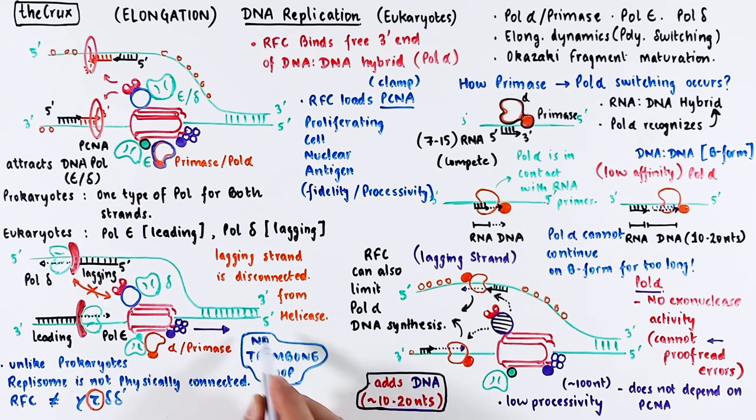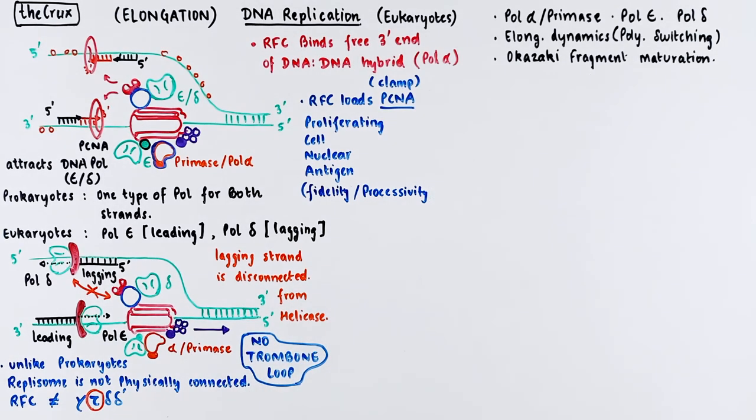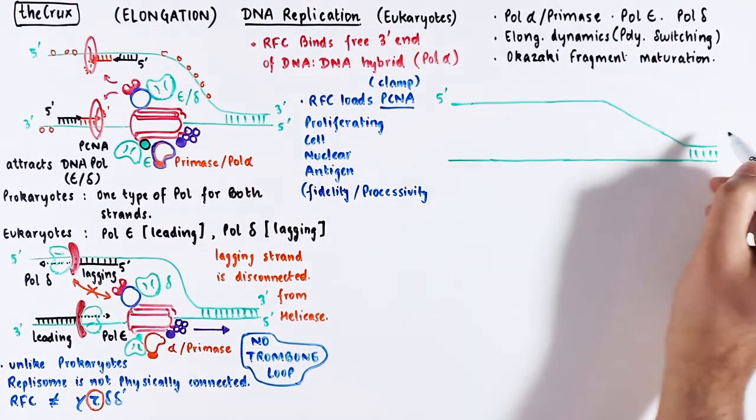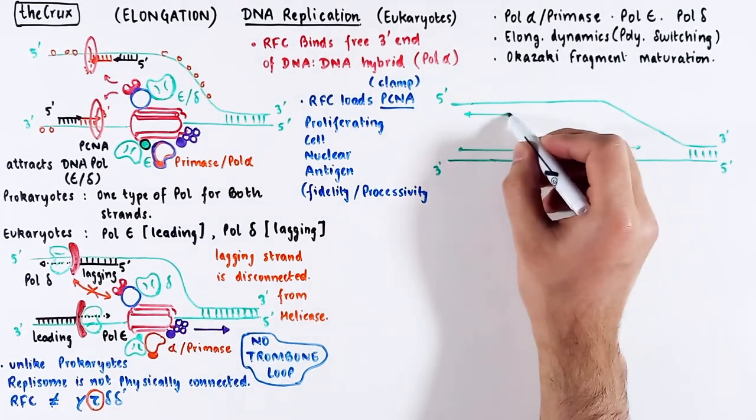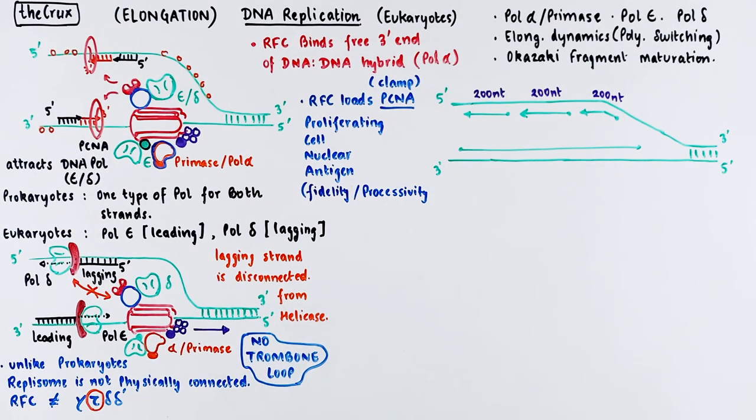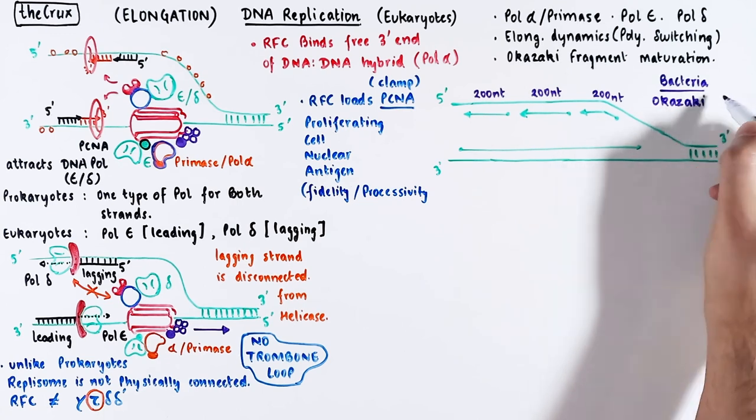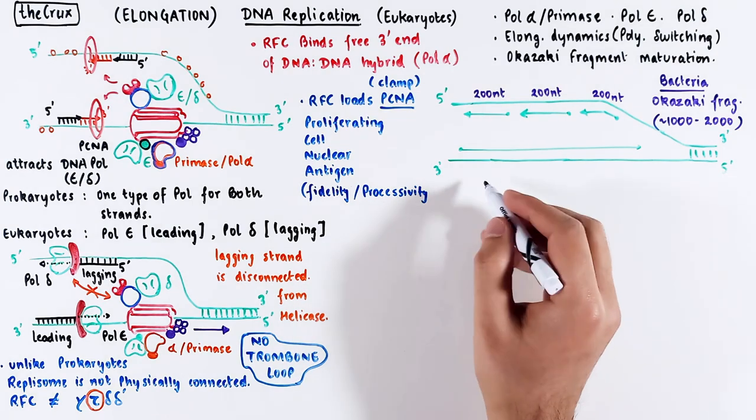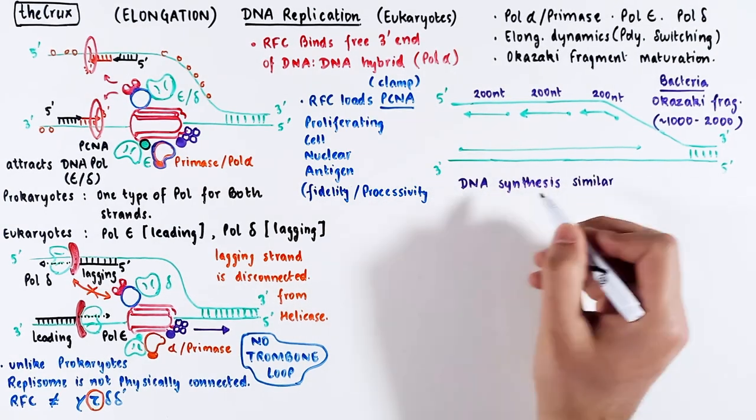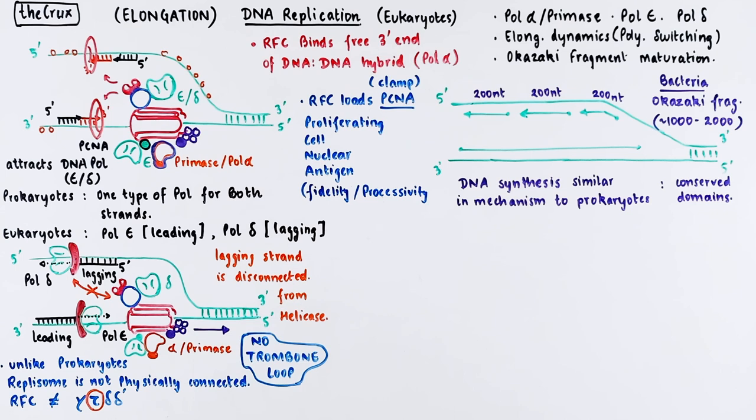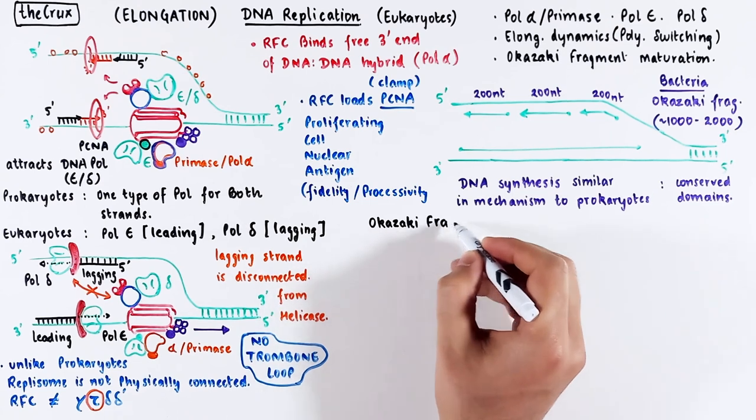But the general principle of lagging strand synthesis stays the same. So following the synthesis from the replication fork, you get short sequences of DNA as the lagging strand and one long sequence on the leading strand. The short stretches of DNA are about 200 nucleotides in length. Contrast this to prokaryotes. These okazaki fragments are about 1000 to 2000 nucleotides in length. So eukaryotic okazaki fragments are 10 times shorter. By the way, the DNA synthesis mechanism involving the metal catalysis reaction is the same as in bacteria, because many of the important domains in the DNA polymerase are conserved. I have a video linked down in the description if you're interested in learning more about it.